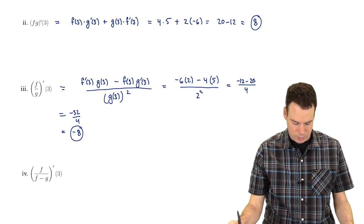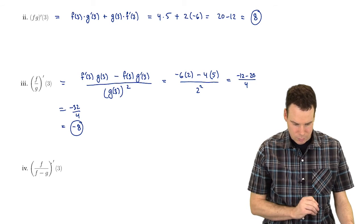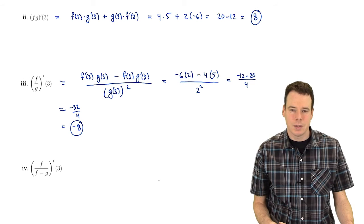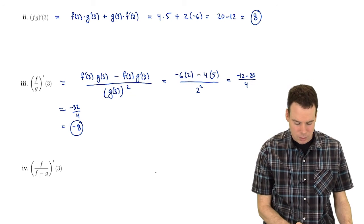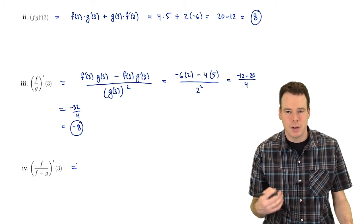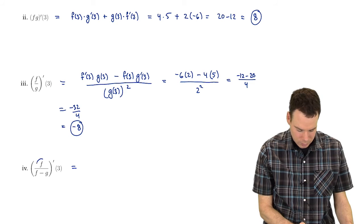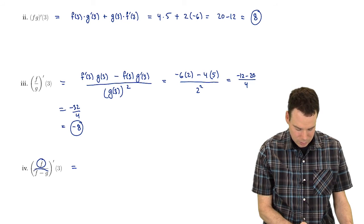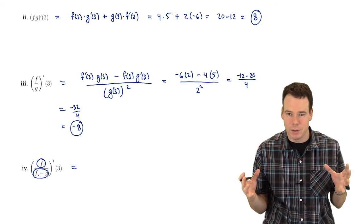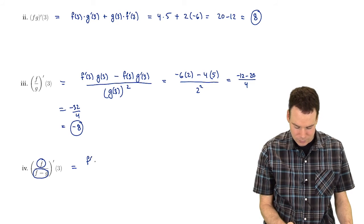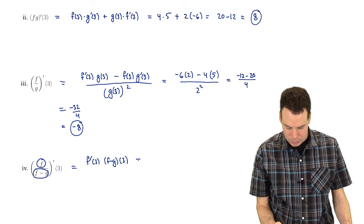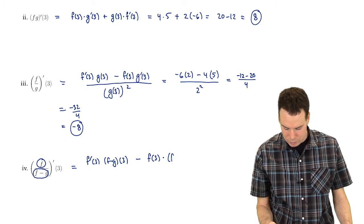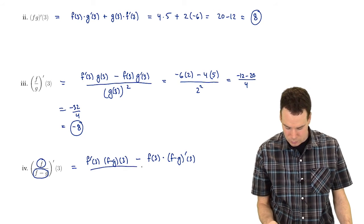How about the next example: (f over (f minus g)) prime. This is going to involve a few different rules — we see there's a quotient and there's a difference. It's important to look at this and identify the outermost operation, the very last thing being done. This is a collection of some function divided by some other function, so at the outermost level this is a quotient rule. So this is the derivative of the top function times the bottom function, minus the top function times the derivative of the bottom function, all over the bottom function squared.